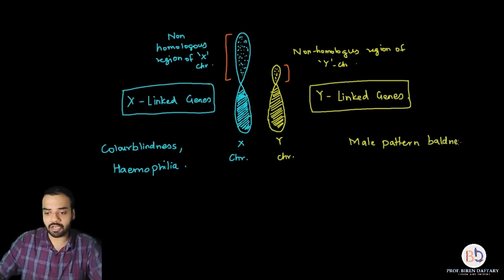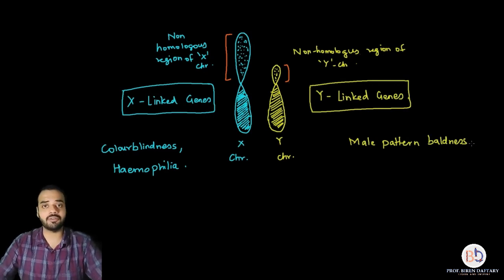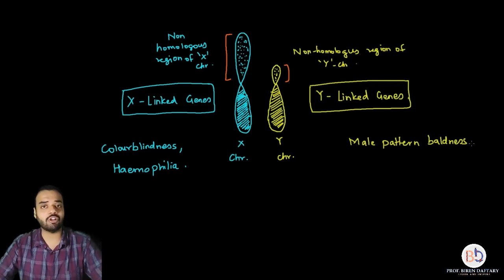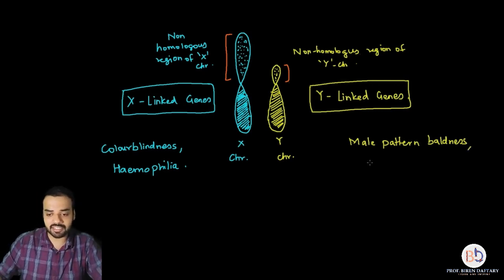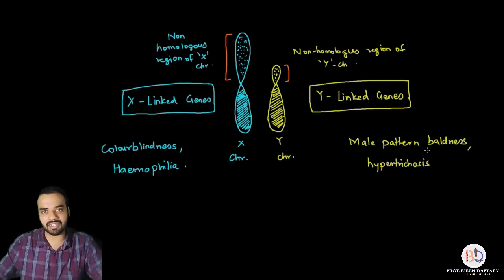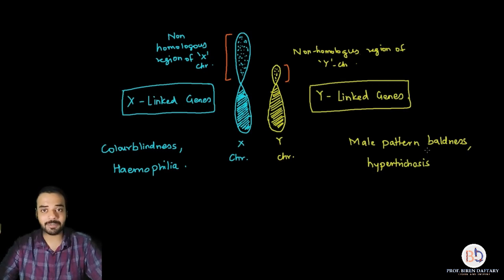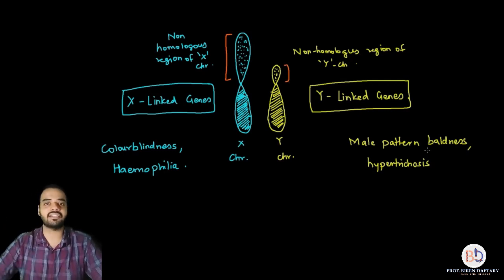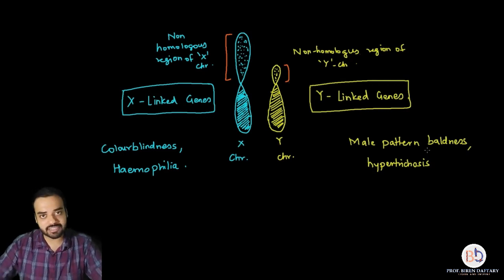Male pattern baldness is when the father has baldness and the gene responsible for it is transferred to the son — it is a Y-linked gene, present in the non-homologous region of the Y chromosome, so the son also gets it. Hypertrichosis is a condition where there is a lot of hair growth on the external ear — on the pinna — and that condition is also Y-linked.